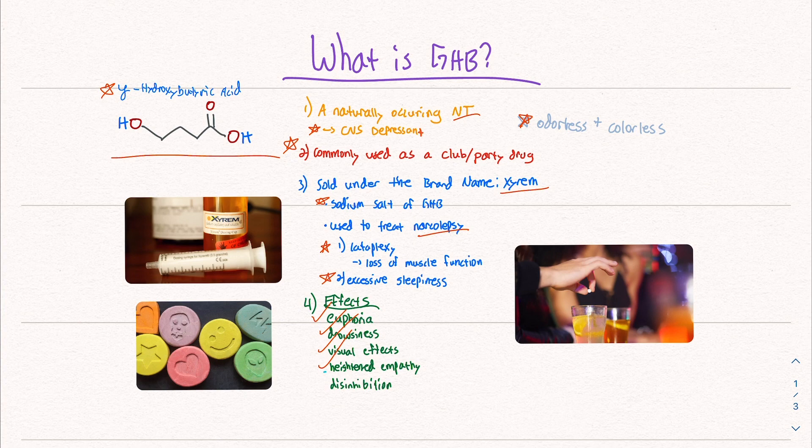GHB has often been compared to a mixture of almost alcohol and MDMA, kind of a balance between the two. And you can also expect disinhibition. Disinhibition is the feeling you get when you drink alcohol, which is why it's called liquid courage. GHB has that similar effect along with all these others.